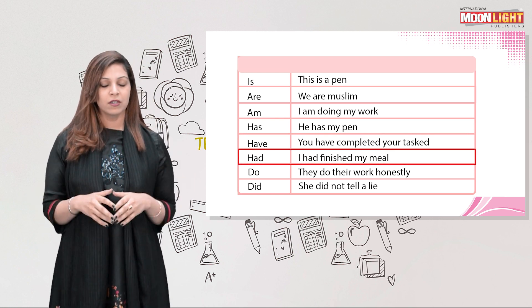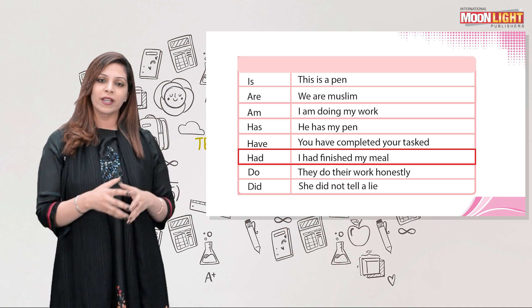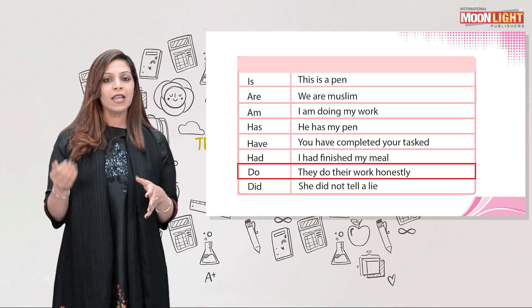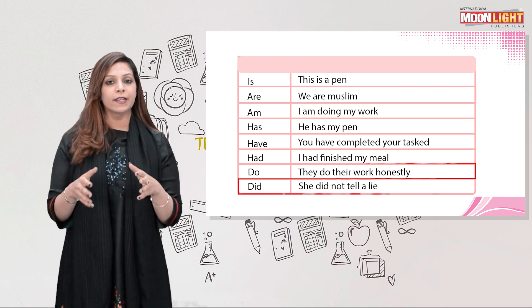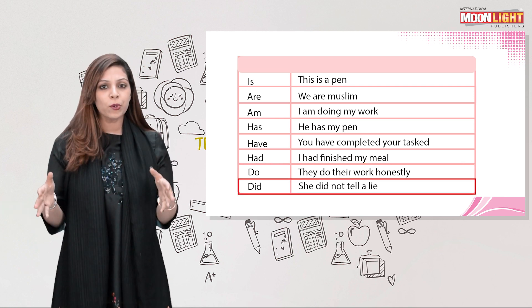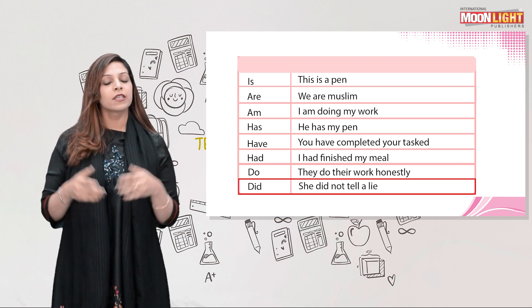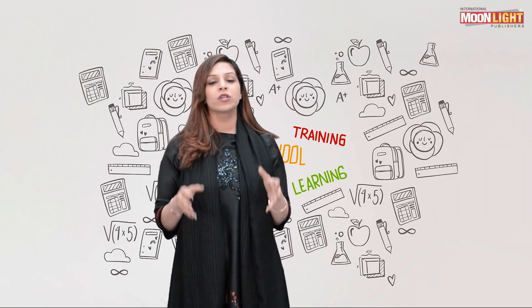Using 'had': I had finished my meal; you had finished your meal; you had joined that meeting. Using 'do': I do my homework; they do their work honestly. Using 'did': I did not go to the park; she did not tell a lie; the children did not run fast.